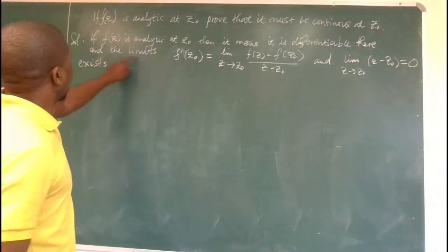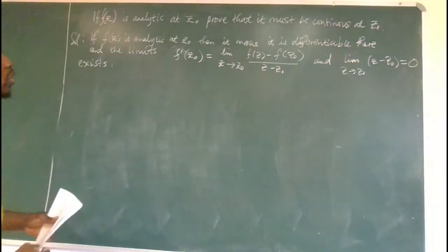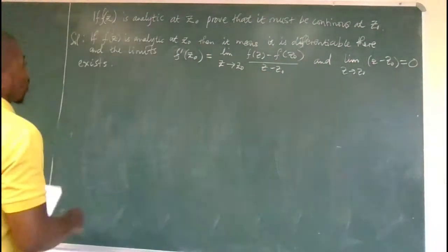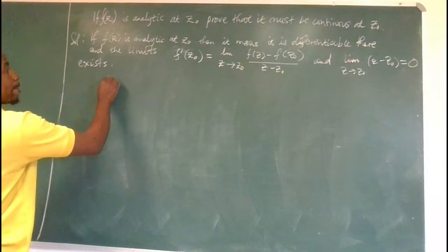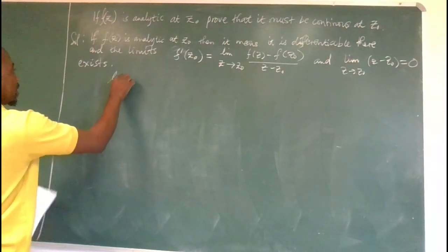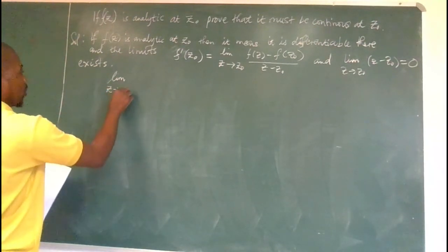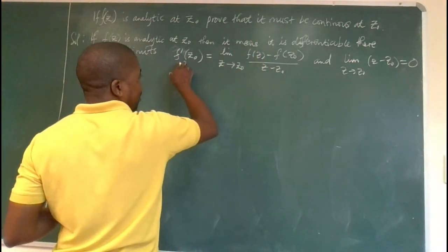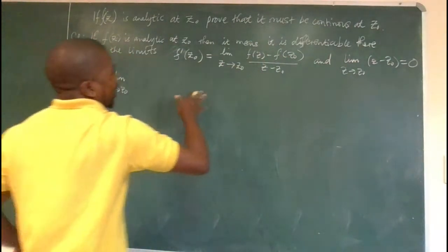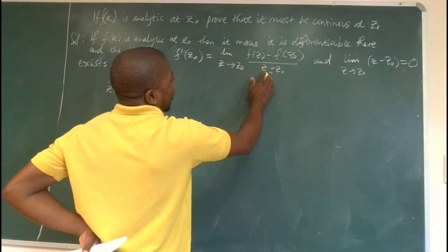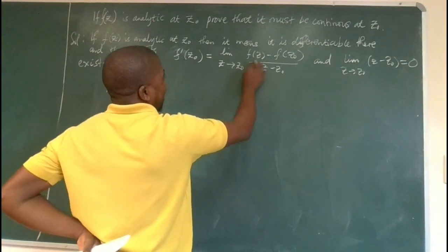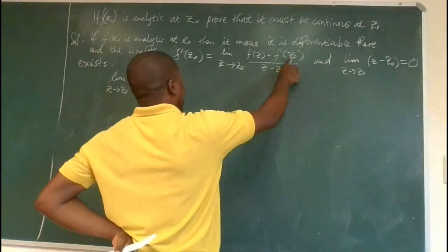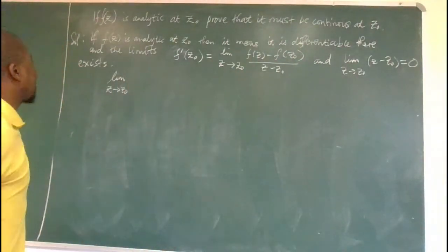Because of it being analytic and thereby implying differentiability, this limit and that limit exist. How do you proceed then? There is another way of writing the limit for differentiation. You find in other texts they say delta z approaches 0, then they'll have delta z in the denominator, and in the numerator you have f of z0 plus delta z minus f of z0. So, it's just another way of writing that limit.